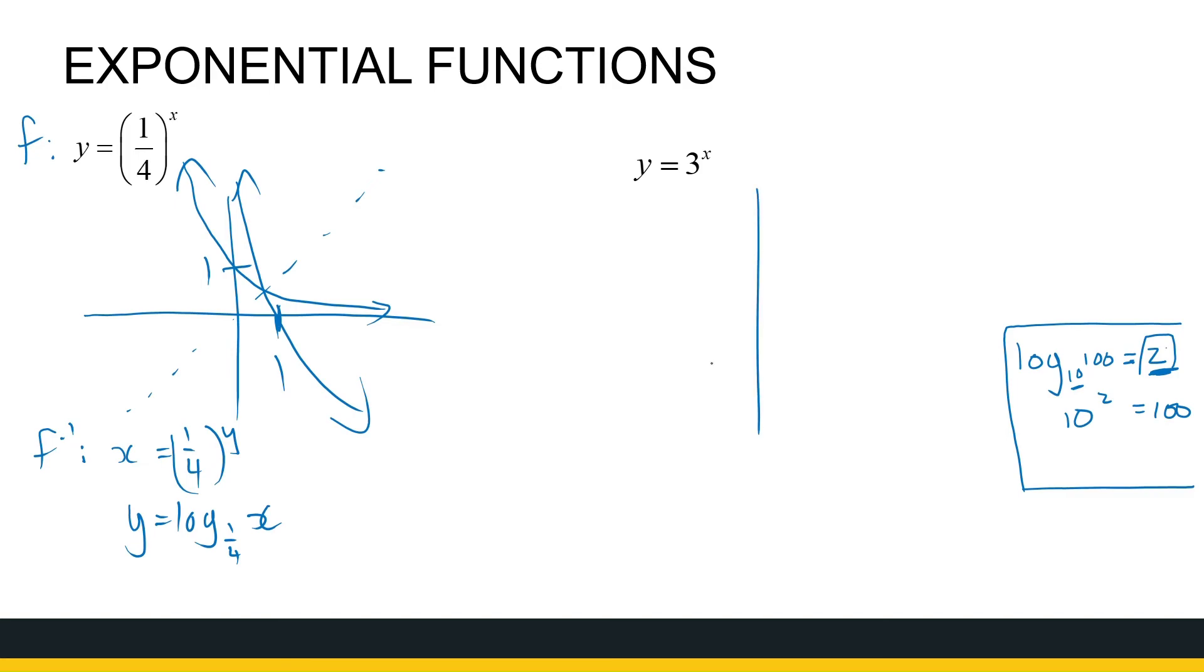Let's look at 3 to the power x. 3 to the power x is going in this direction. So the inverse function should look like this. What is the inverse function going to be? The inverse function is going to be x equal to 3 to the power y. So the exponent y is equal to log the basis 3 of x. And that's what the graph looks like.